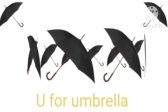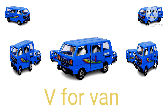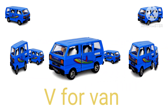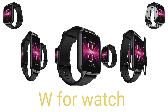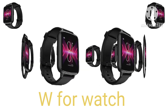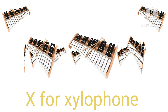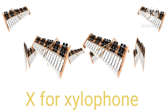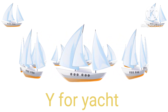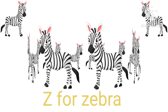U for umbrella, B for van, W for watch, X for gylo phone, Y for yacht, Z for zebra.